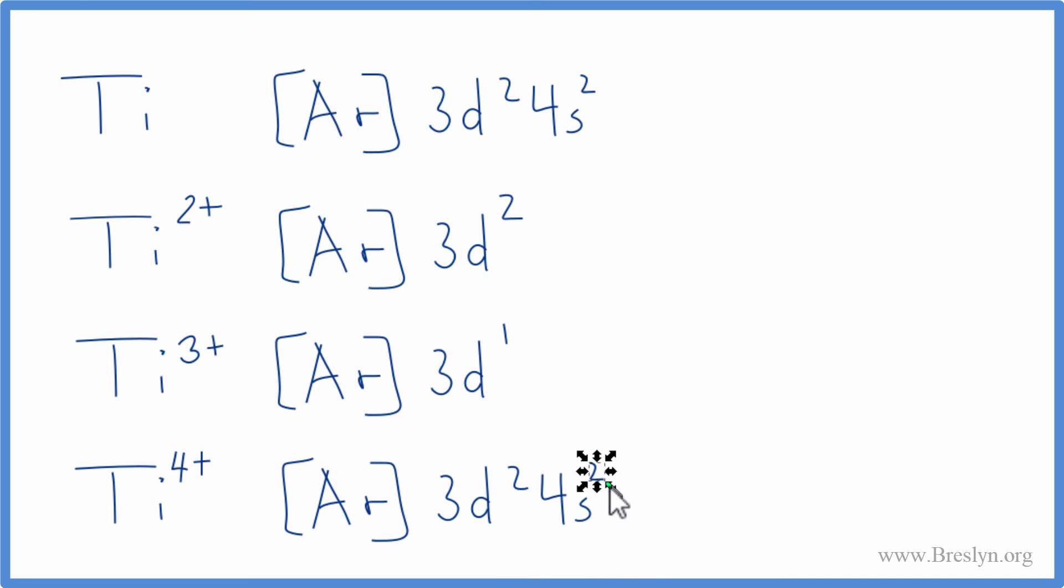Sometimes you'll see it written like this, though. Instead of the numbers here, they'll write zeros. That's okay, too. Either way, these are the electron configurations for titanium and its ions.